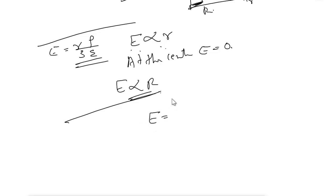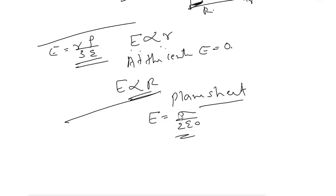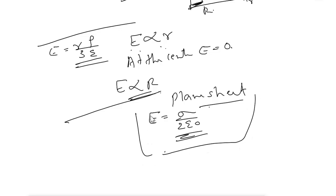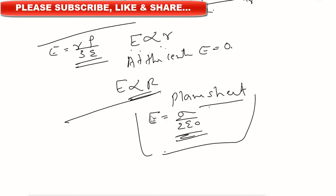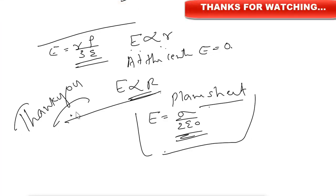For a charged thin infinite plane sheet of charge, E = σ / (2ε₀), where σ is the surface charge density. These formulas — for the straight conductor, spherical shell, solid sphere, and plane sheet — are very important. In the next sessions we will do numerical and MCQ questions covering the full first chapter on electric charges and fields. Please subscribe, like, and share. Thank you for watching.